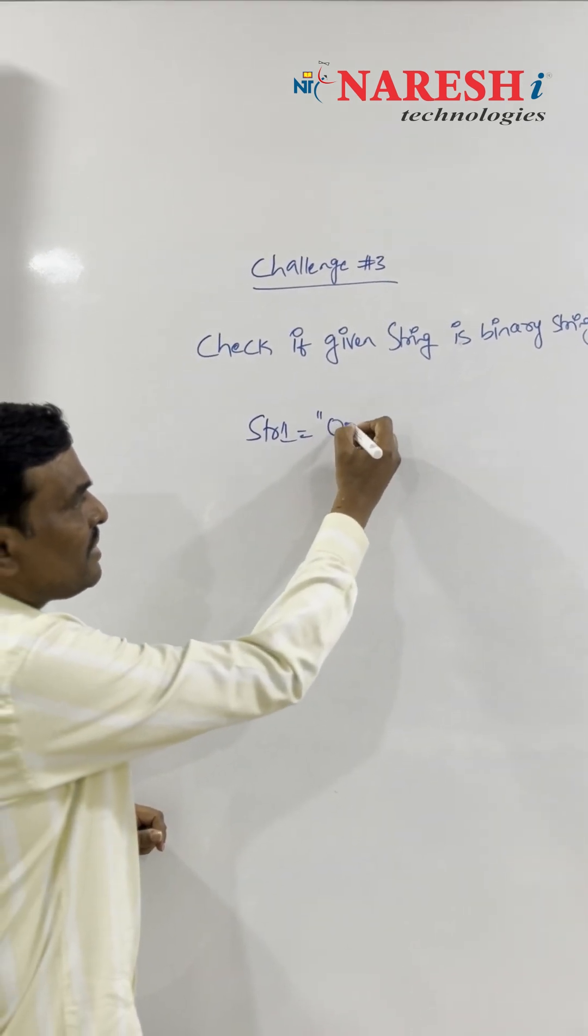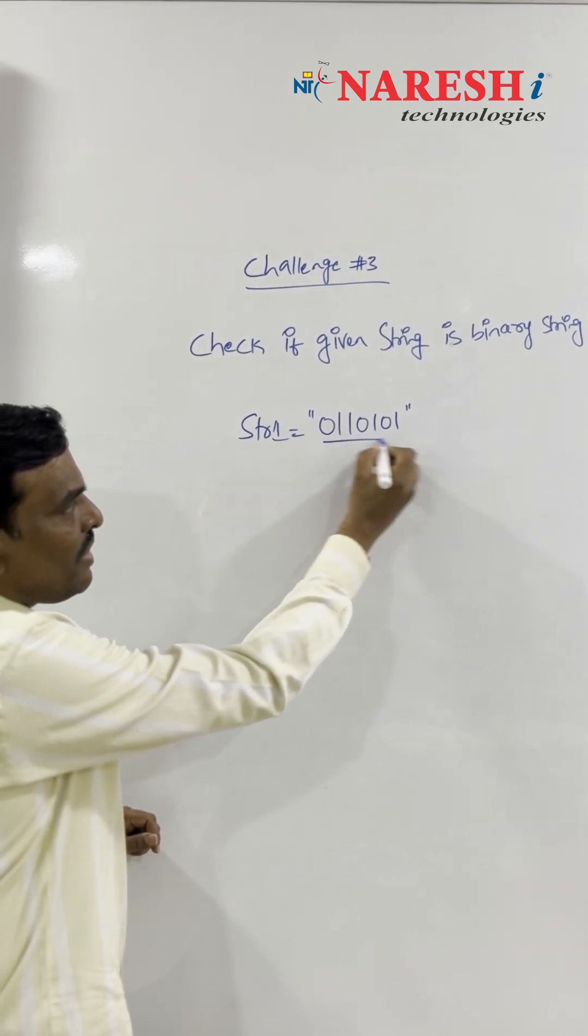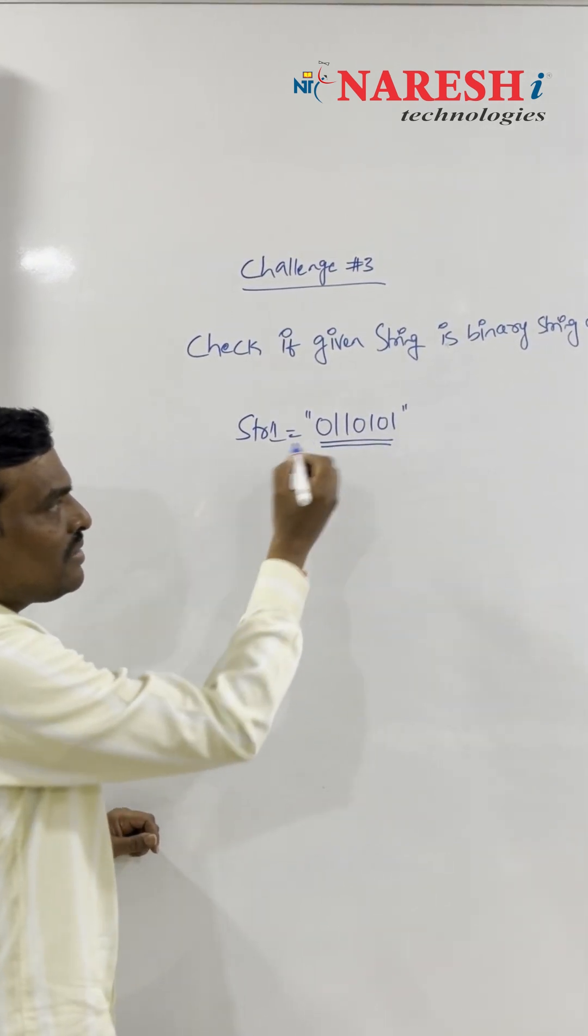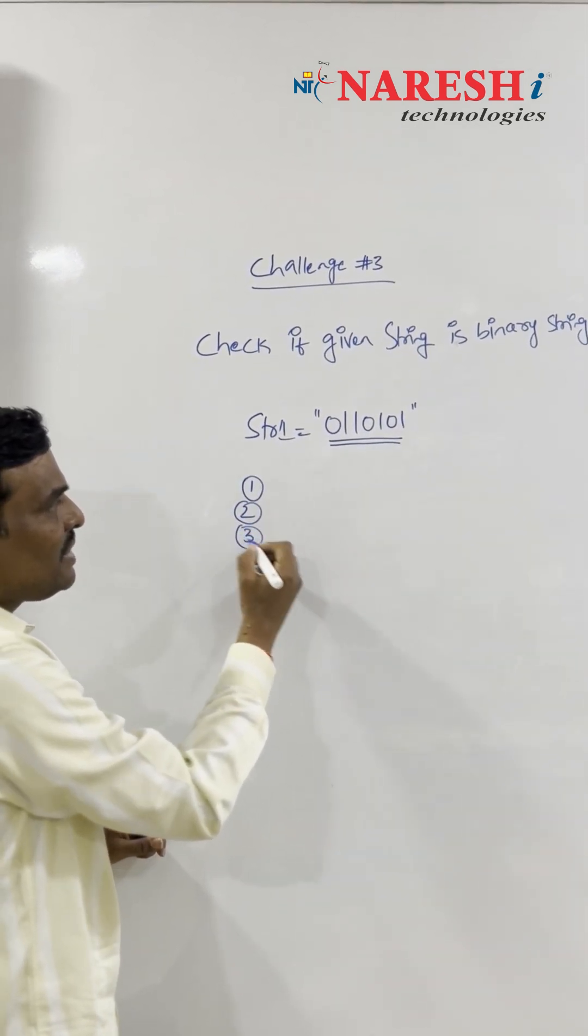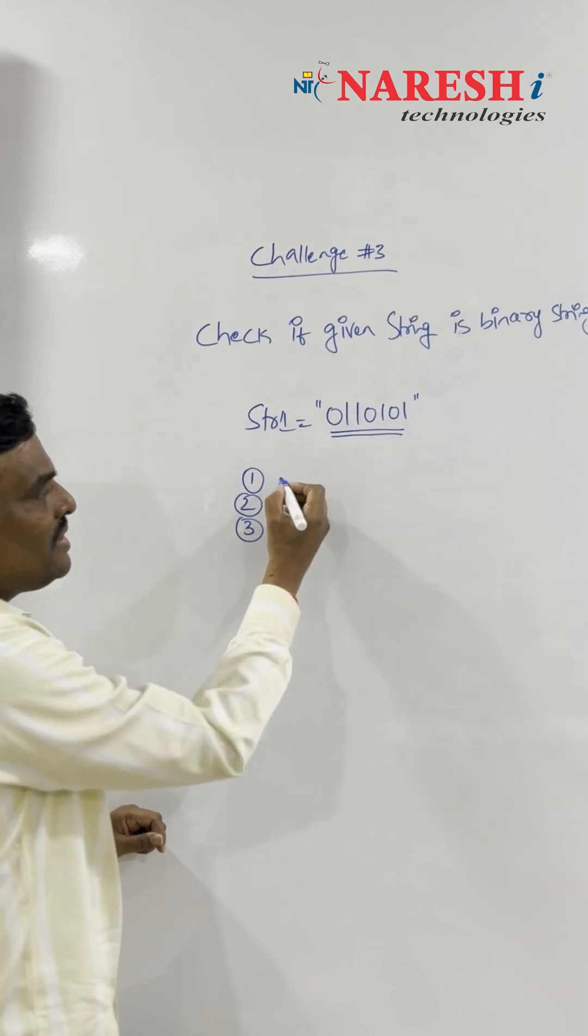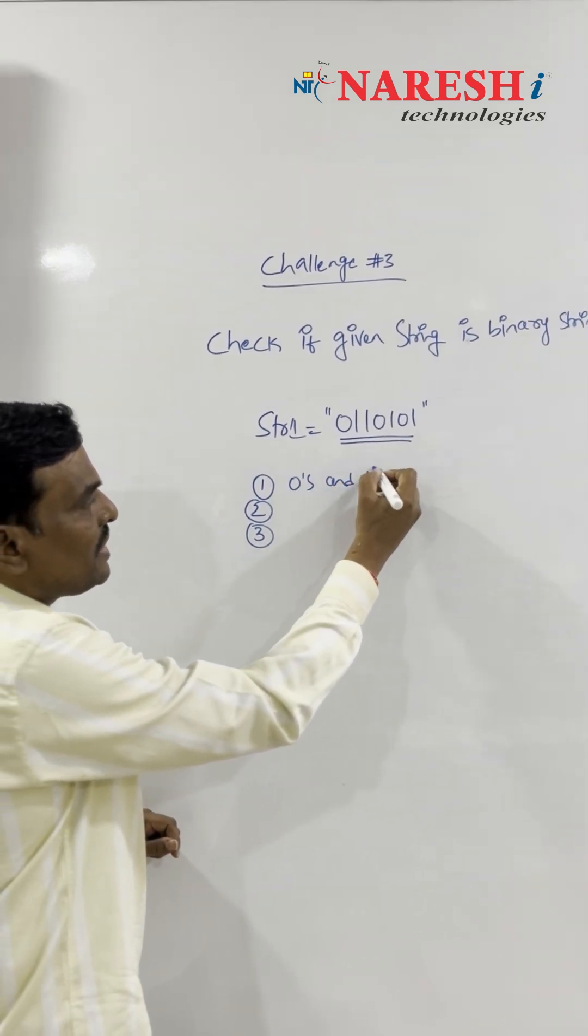Which consists of zeros and ones. Our challenge is to find out whether this string contains only zeros and ones. There are three scenarios here: the string contains zeros and ones.